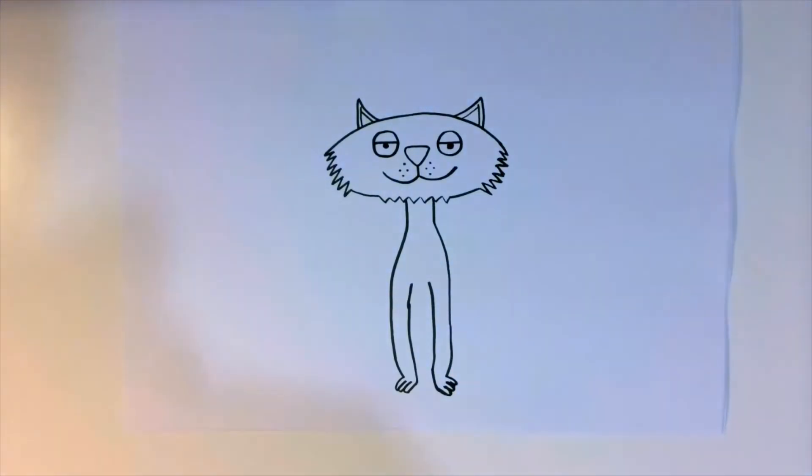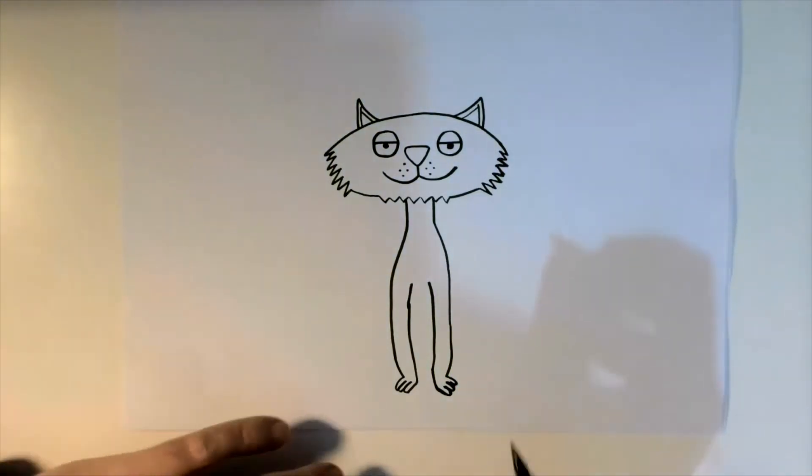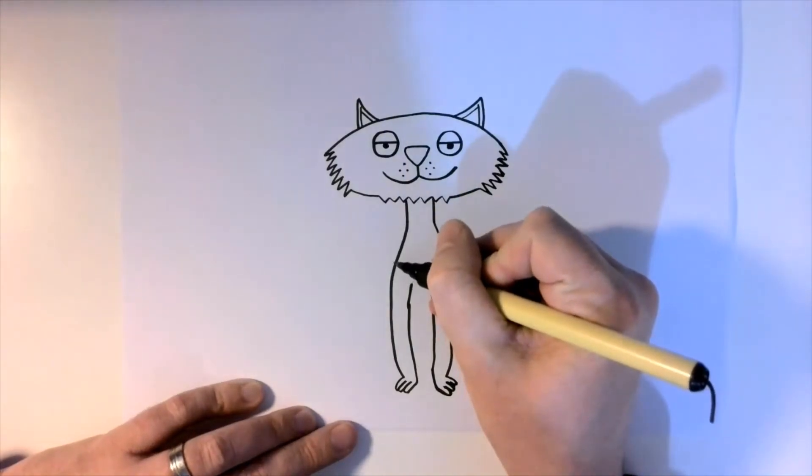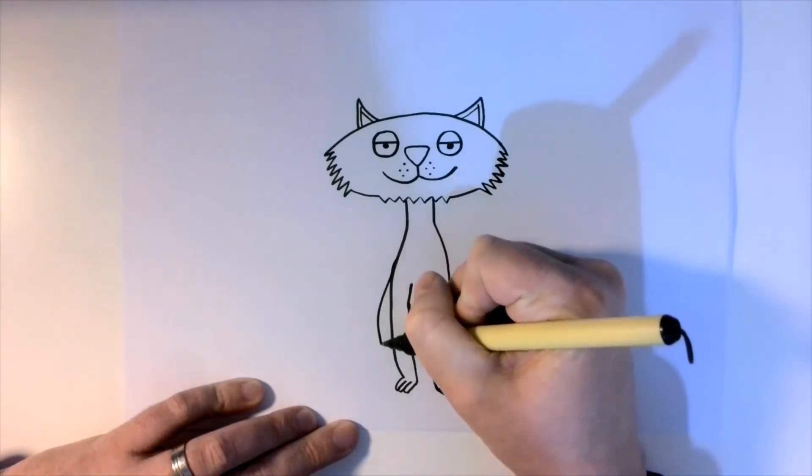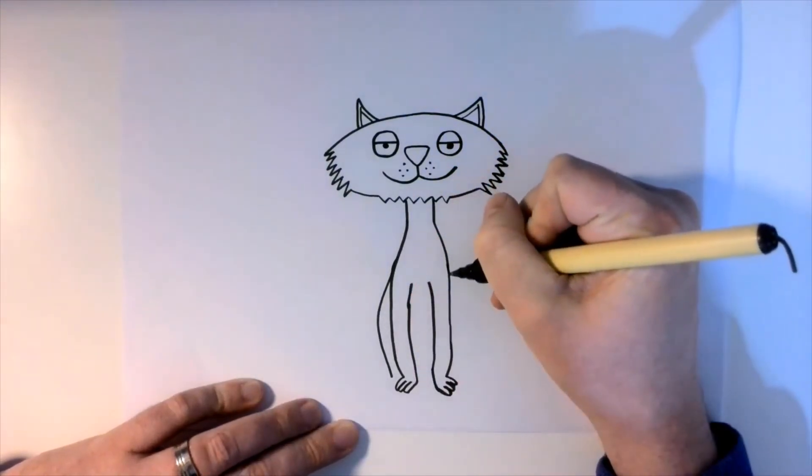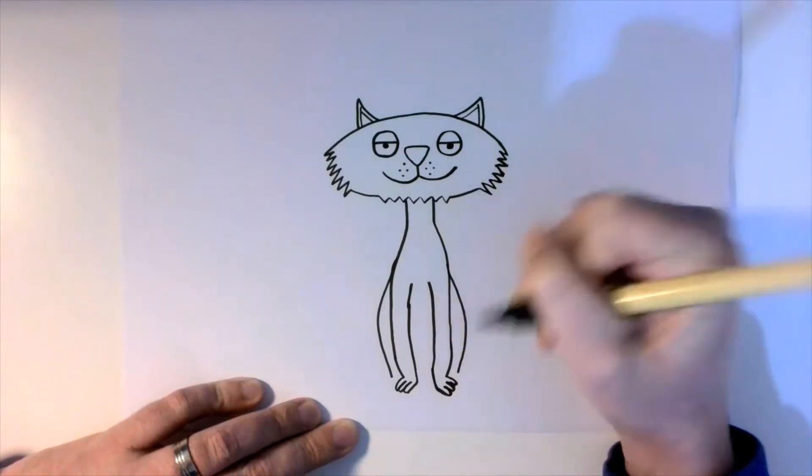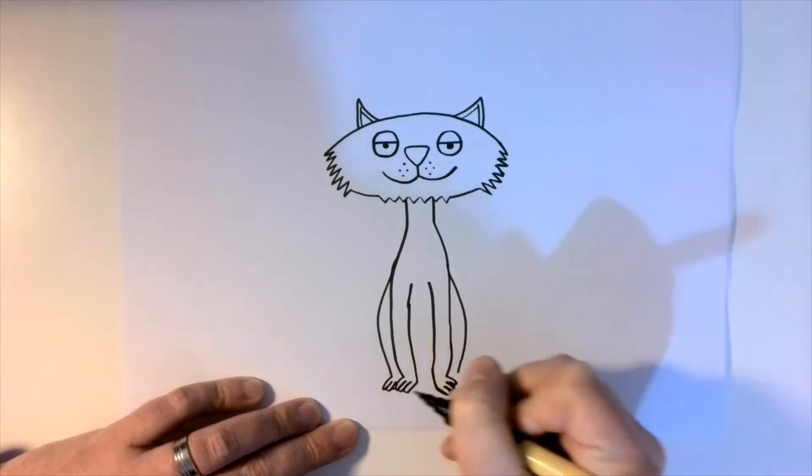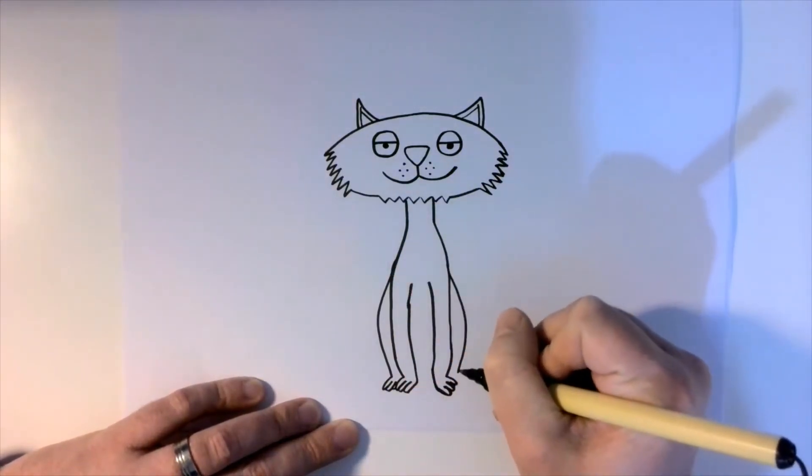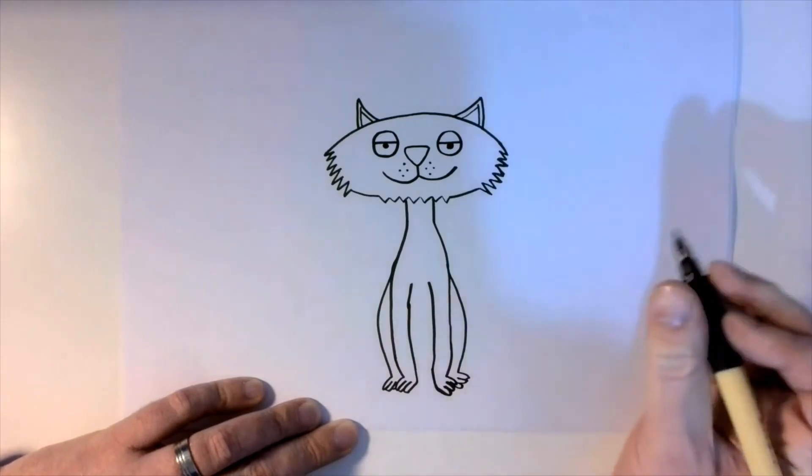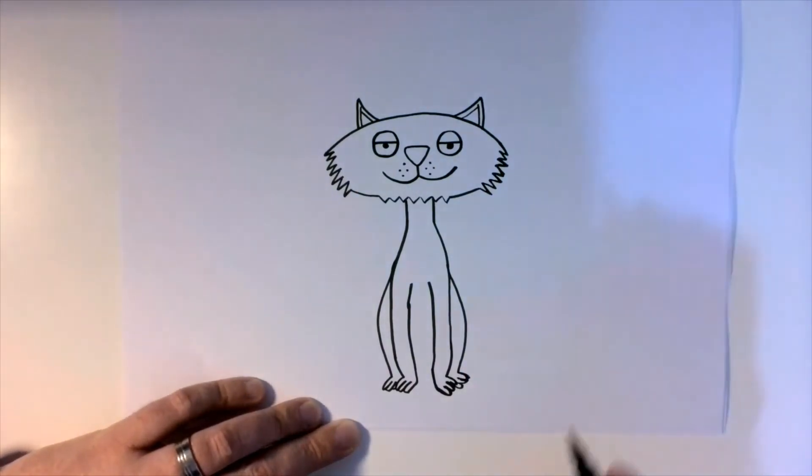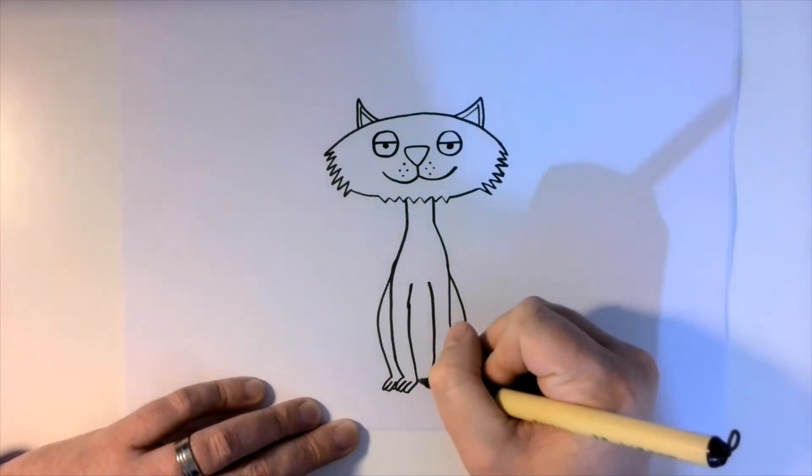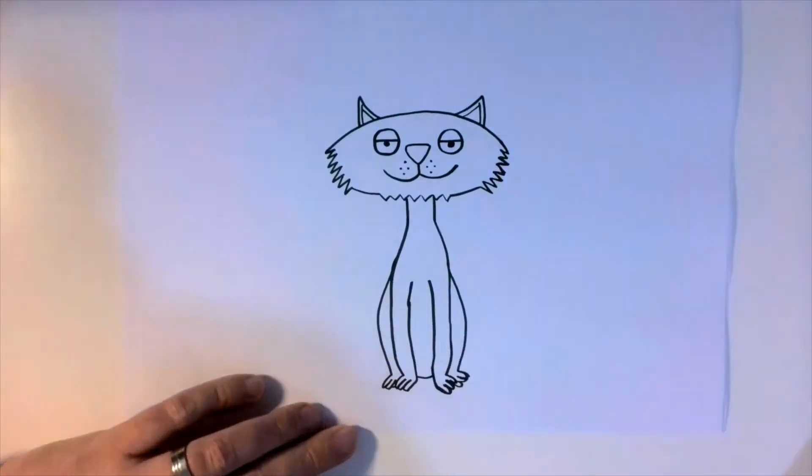Now the back legs. From here, from where this curve is, we're going to have an extra curve that comes around like this, the other side. We're going to have two more feet. They're going to be slightly hidden by the front legs. One, two, three. We're going to draw feet on that side, and then just under here, just where the bottom would be there.